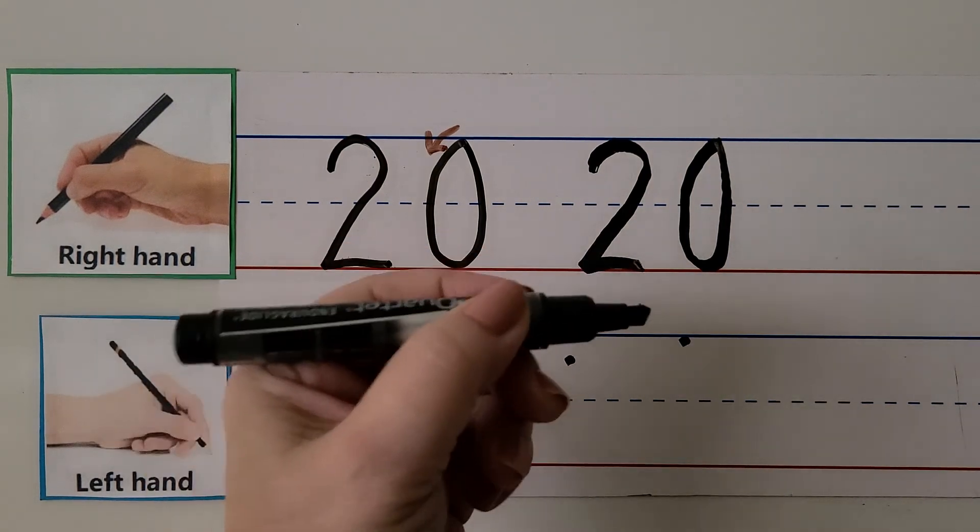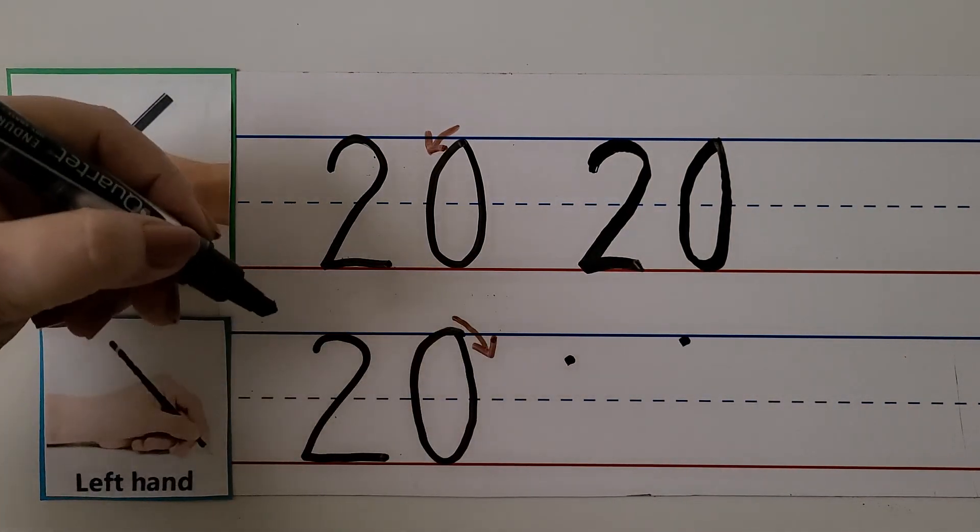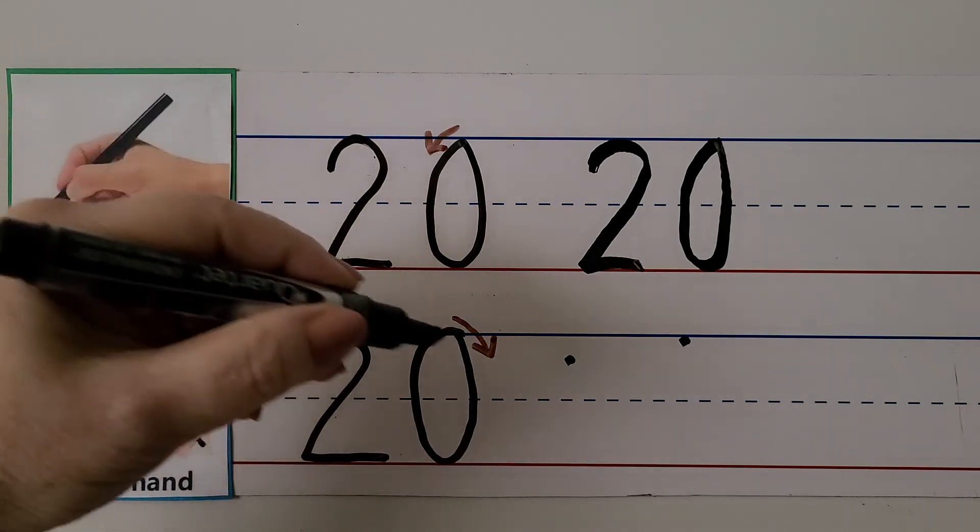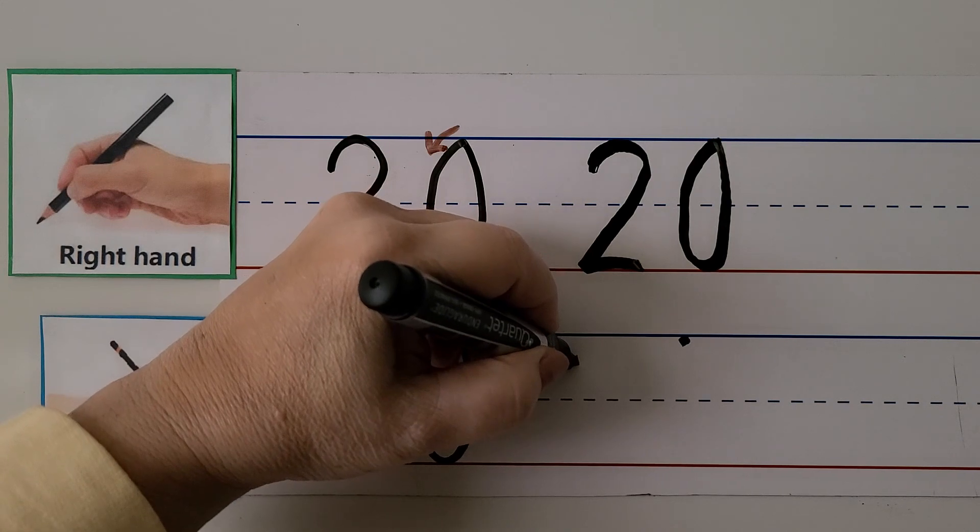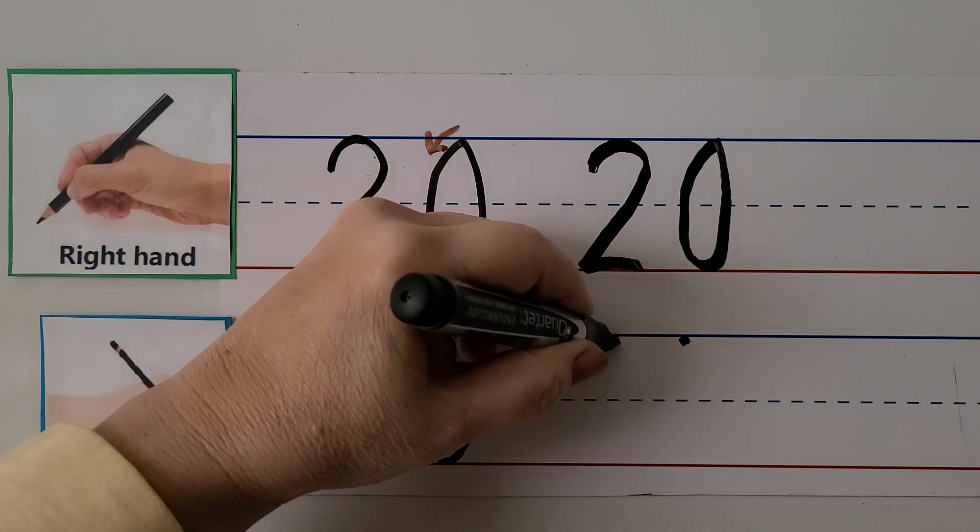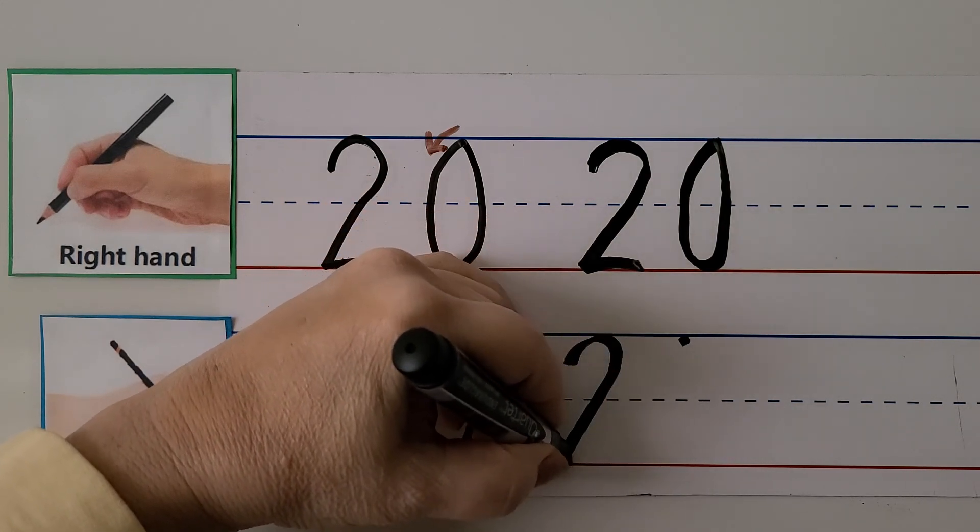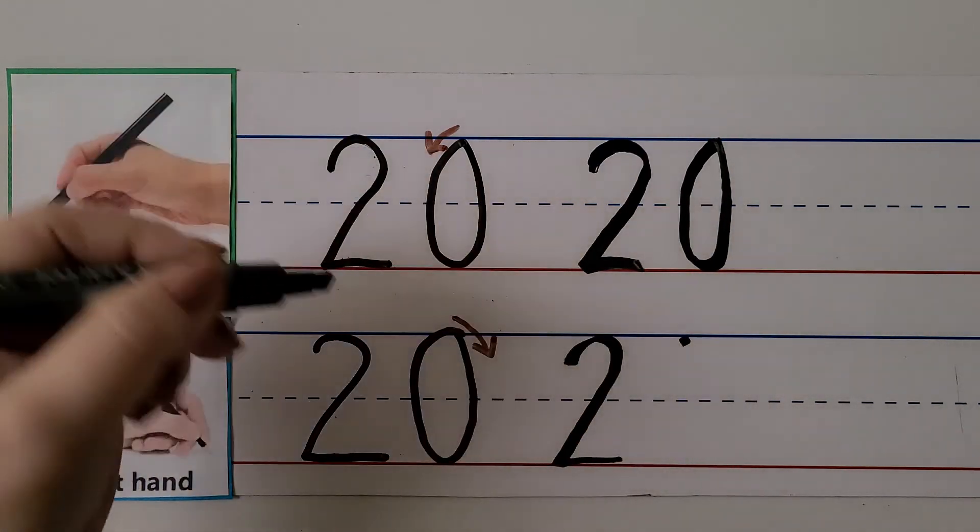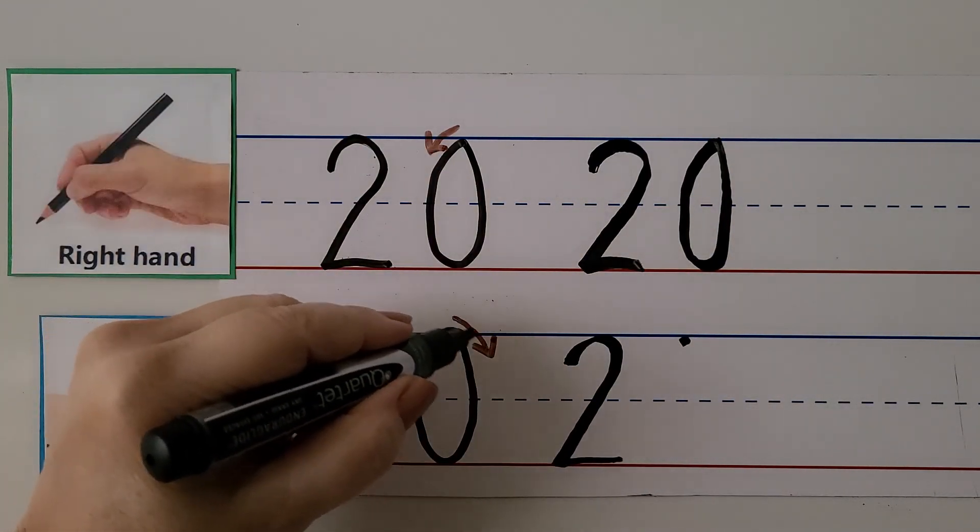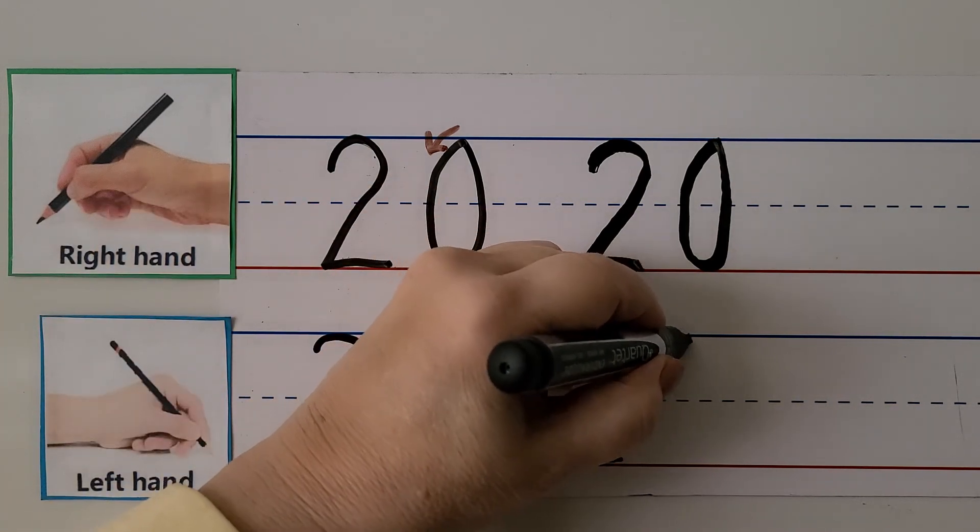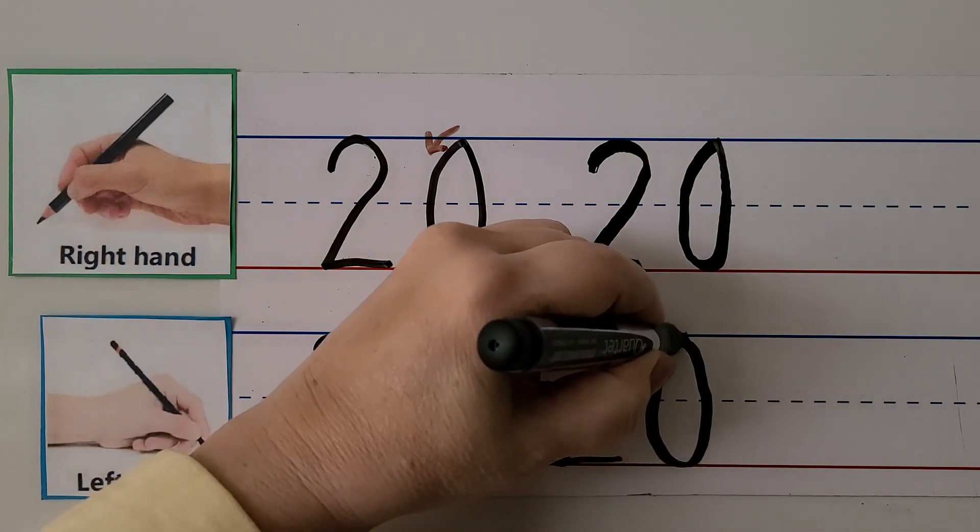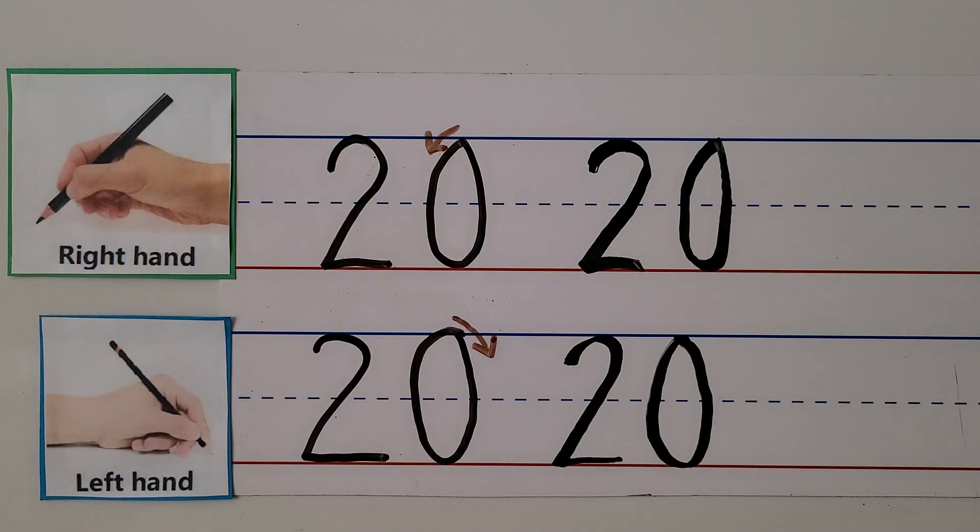We can write 20 with our left hand. We make the 2 and then the zero next to it. Start here, curve up to the top line, come down on a slant and push away. For the zero, come around this way, pull towards our hand and come back up. That's the number 20.